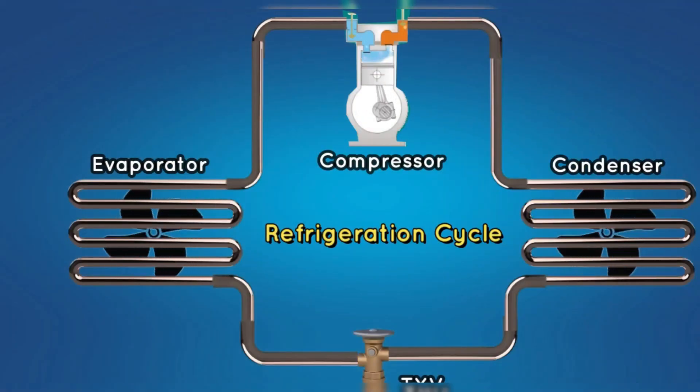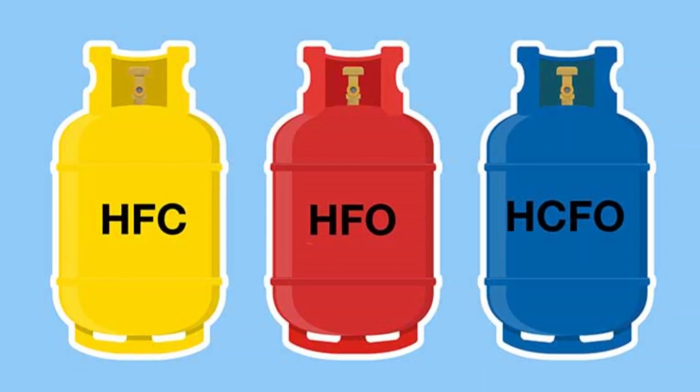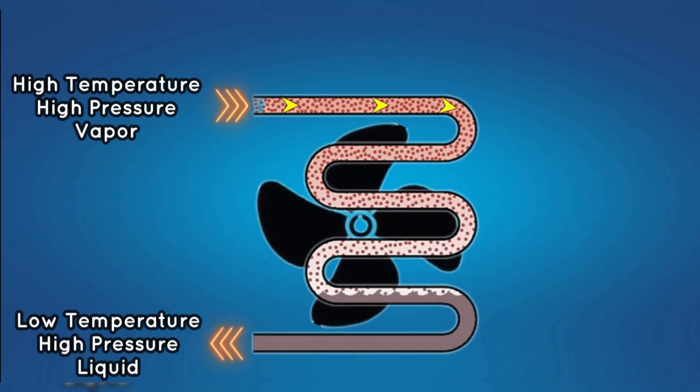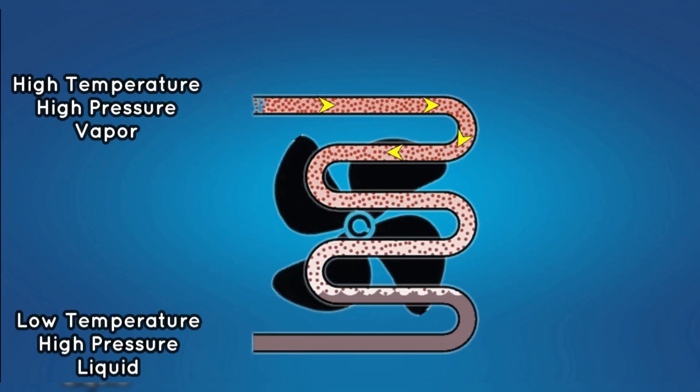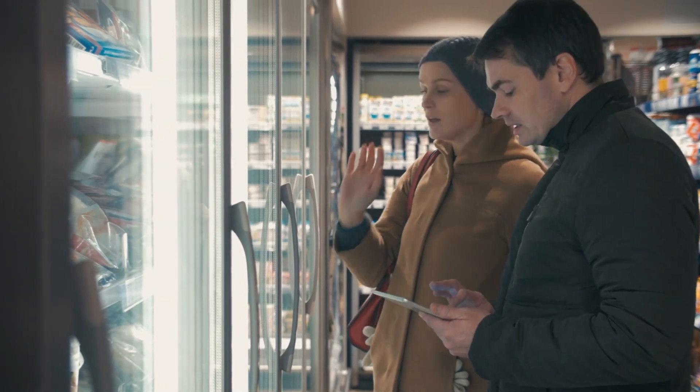It's a time-tested method dating back to the 1800s. At its heart, it relies on refrigerants—chemical compounds like hydrofluorocarbons or HFCs—that absorb and release heat as they change phase between liquid and gas. This is how heat gets pumped out of your fridge and away from your living room during summer.